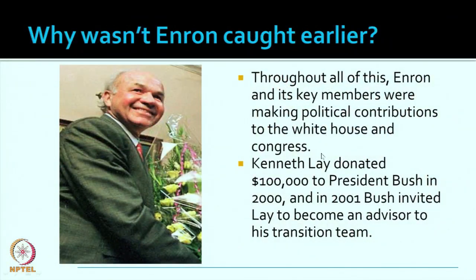Kenneth Lay, the person in charge throughout, was making large political contributions — he had donated more than 1 lakh dollars to President Bush, and in 2001 Bush had invited him to become an advisor to his transition team. Enron was a very big donor to both major US parties, and indirectly their malpractices were getting a cover-up. This is a very striking case of political corruption in the US.